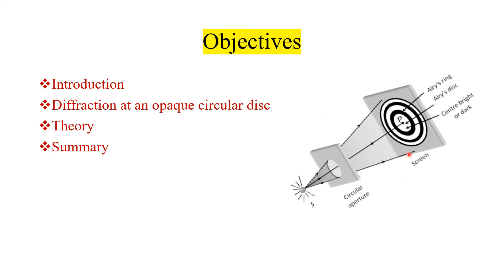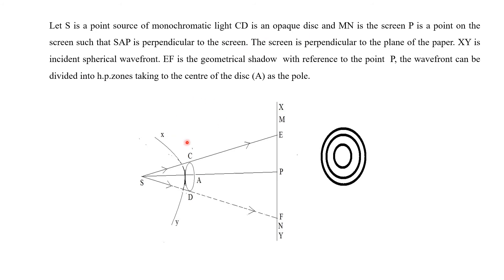Let us discuss in detail about the diffraction at a circular disk. This is a good example of Fresnel diffraction. Here, S is a point source of monochromatic light. CD is the opaque circular disk, MN is the screen, and P is a point on the screen such that SP is perpendicular to the screen. XY is the incident spherical wavefront.